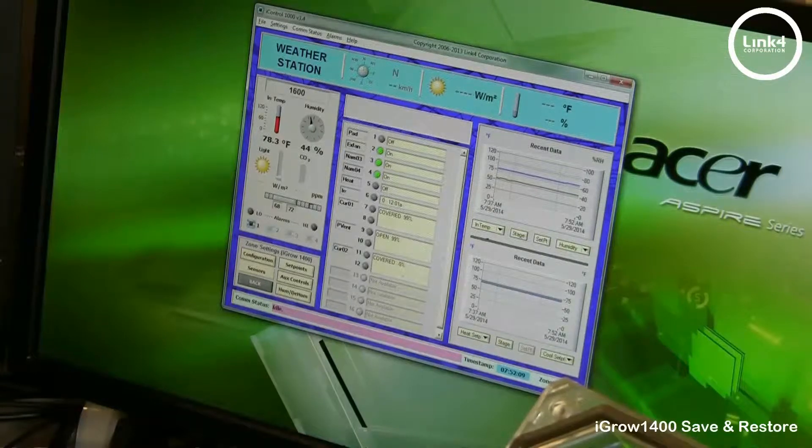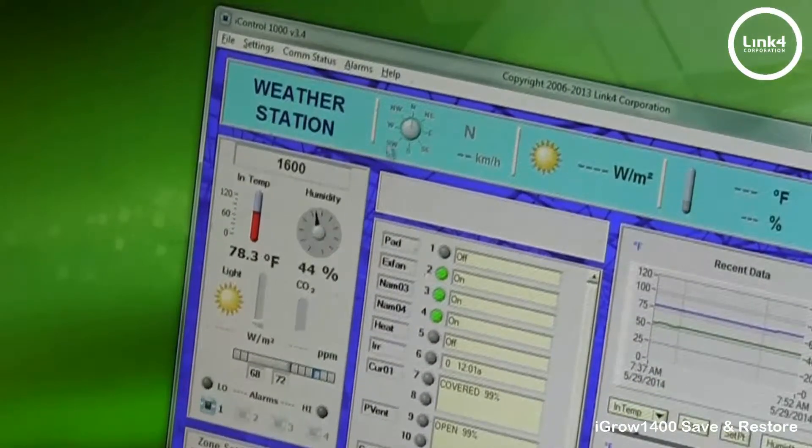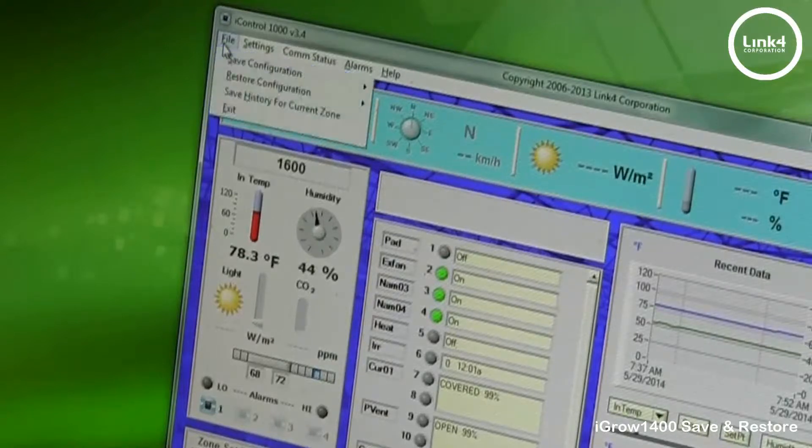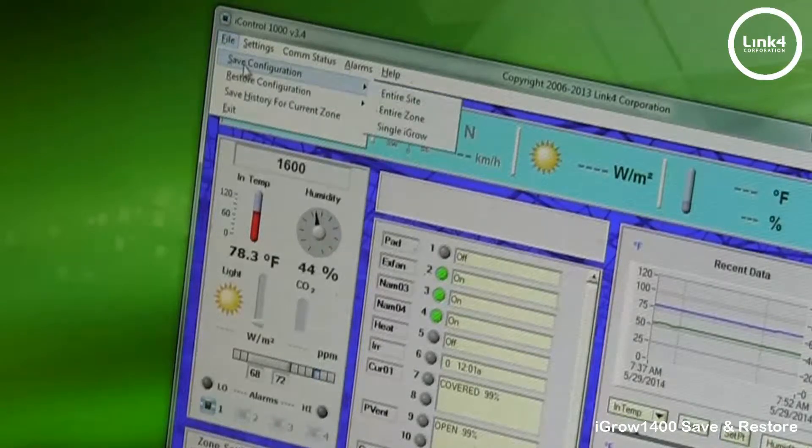So with the iControl software open, we're going to go to File. We're going to save this existing configuration, and we're going to save this entire site.